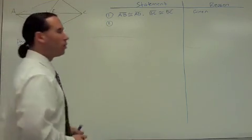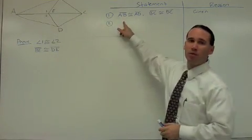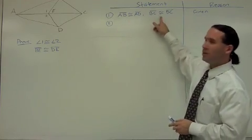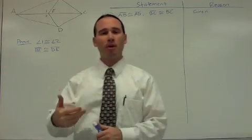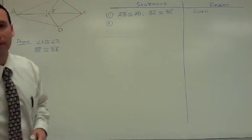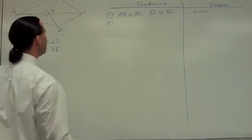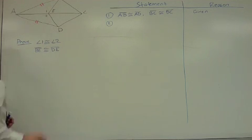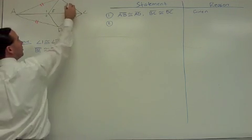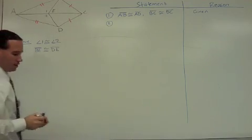If we take a look at this picture here, we're initially given that AB is congruent to AD, and that BC is congruent to DC. Anytime you're working on a proof, you want to start by marking up your picture. We'll put givens in red. So we know that AB is congruent to AD, and we know that BC is congruent to DC.